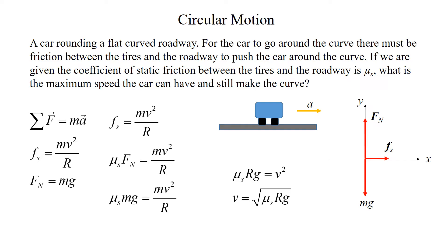Since we want the maximum speed without skidding, we use the maximum static friction. Replacing F_s with mu_s times the normal force gives mu_s · F_n = mv²/r. Substituting F_n = mg gives mu_s · mg = mv²/r. The mass divides out; multiplying both sides by r gives mu_s · r · g = v², so v = √(mu_s · r · g). This is the maximum speed. If we go any faster, the car will skid — it will go straight while the road curves away, putting us in the ditch.